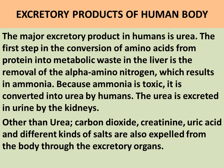The major excretory product in humans is urea. The first step in the conversion of amino acids from protein into metabolic waste in the liver is the removal of the alpha amino nitrogen, which results in ammonia. Because ammonia is toxic, it is converted into urea by humans. The urea is excreted in urine by the kidneys. Other than urea, carbon dioxide, creatinine, uric acid, and different kinds of salts are also expelled from the body through the excretory organs.